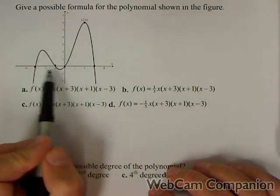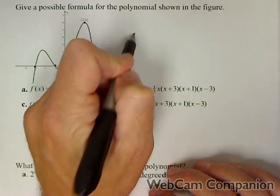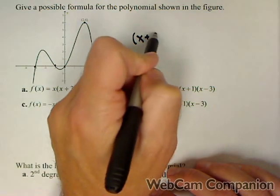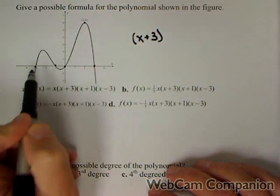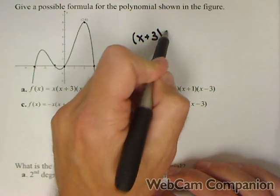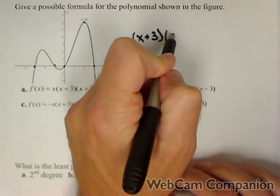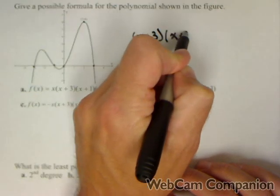But we do have four zeros and each one makes a factor. If negative three is a zero, then x plus three must be a factor because negative three makes that zero. If negative one is a zero, then x plus one must be a factor.